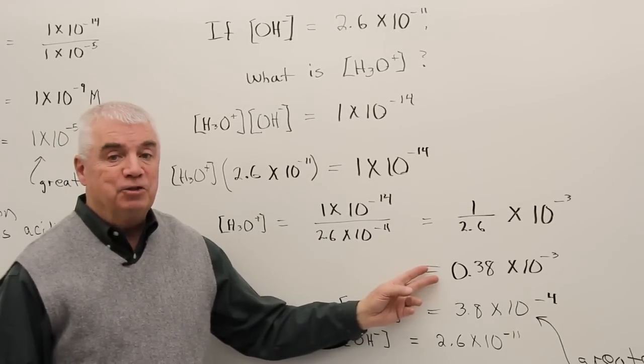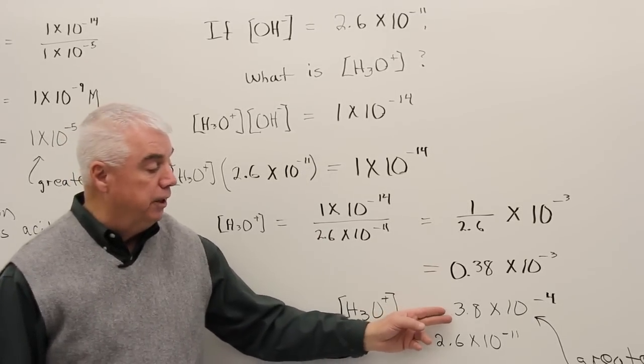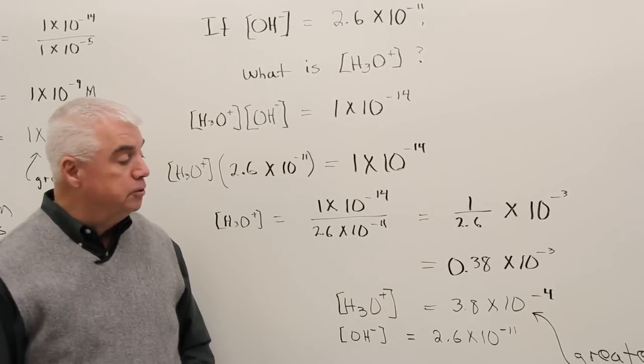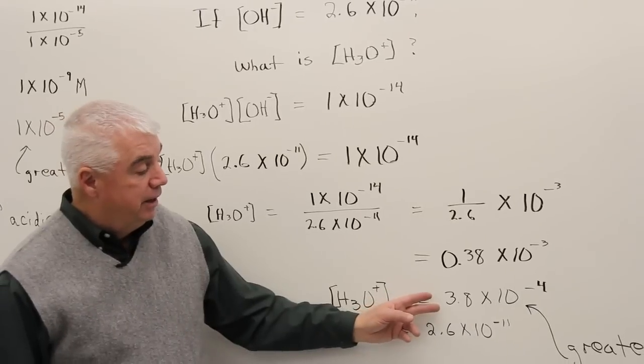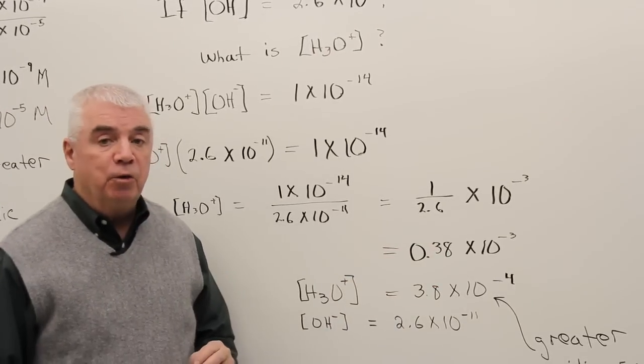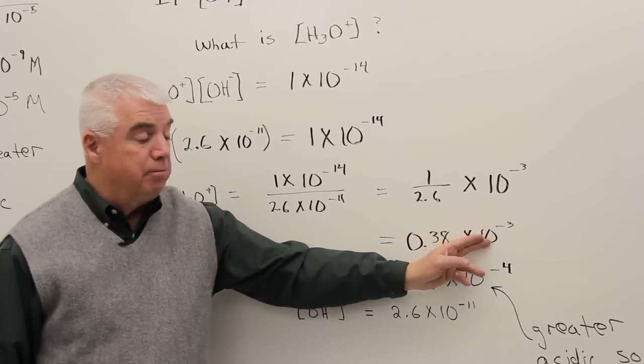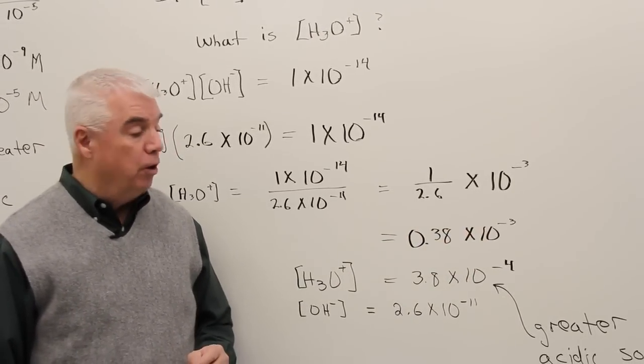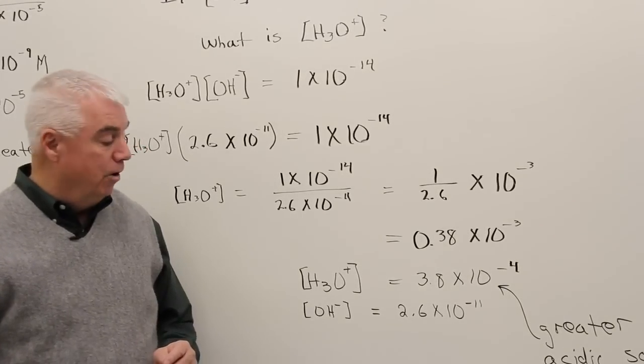Then we'd want to place that in standard scientific notation with the decimal after the first digit. It becomes 3.8. And if I move the decimal one place to the right, I'd balance that by indicating one more place to the left. So it becomes 10 to the minus 4.